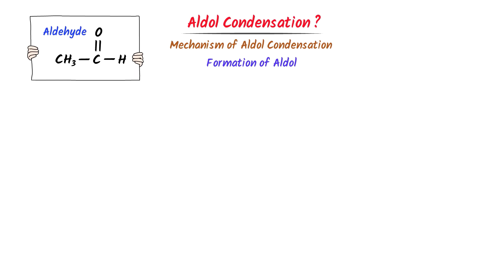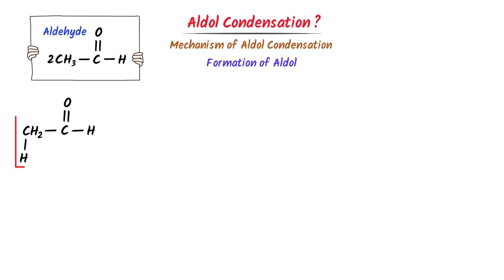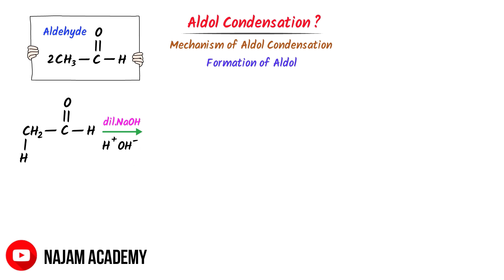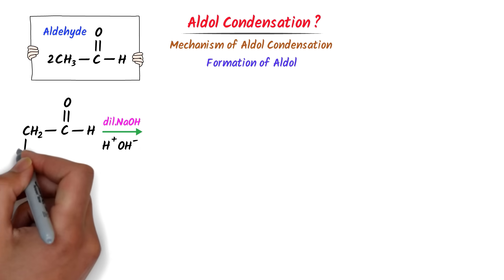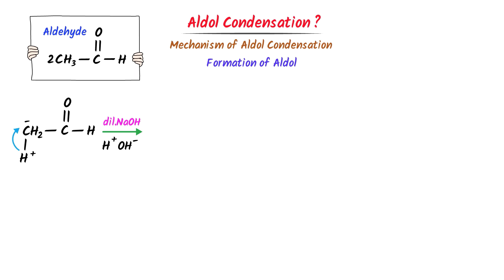Consider this aldehyde. Remember that in aldol condensation, we take two molecules. We can see that this is the main group and this is the alpha hydrogen. I take one aldehyde and write it here with one alpha hydrogen. Now I add dilute sodium hydroxide to it — which, as we learned, contains water. This is the hydroxide ion which has a negative charge. The electrons will shift towards carbon and a positive charge will appear on this alpha hydrogen. Negative charge and positive charge attract each other, so they react together to form a water molecule.